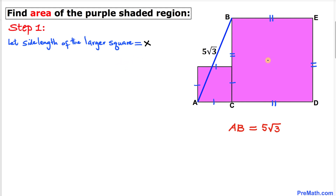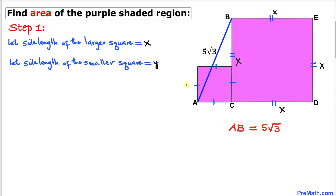Here's our very first step. Let's take care of this large square over here. Suppose the side lengths of this large square be x — since all sides are the same, all sides are going to be x. Likewise, the side lengths of this smaller square are going to be y, so this side is y, this side is y, this side is y, and this side is y as well.